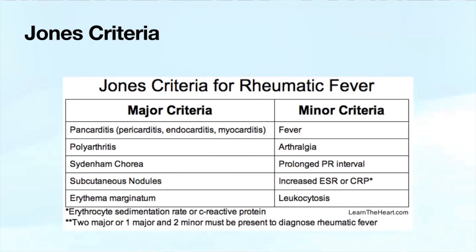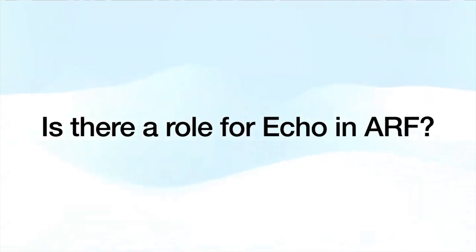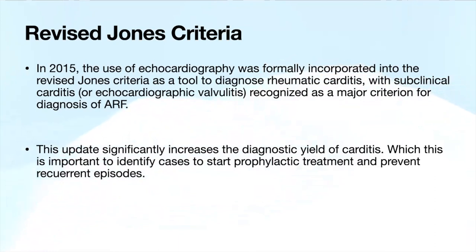When they developed these guidelines, carditis was defined as a clinical finding of myocarditis or pericarditis. But for valvulitis, the only way to pick it up was by auscultation—listening for a heart murmur. Multiple studies in the past 20 years found that most carditis is actually silent carditis: you would not hear a murmur, but if you put the echo probe on, you would find changes compatible with valvulitis. This led them to revise the Jones criteria in 2015. The use of echocardiography was formally incorporated as a tool to diagnose rheumatic carditis—especially silent carditis—and this is recognized as a major criteria.